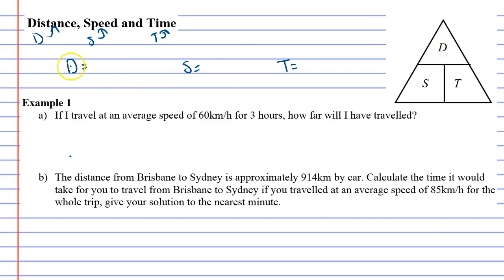If we look at the D, if we want to find the distance, that means we've got to use the S and the T somehow. Now notice that they are next to each other. If they are next to each other you just write speed times time.